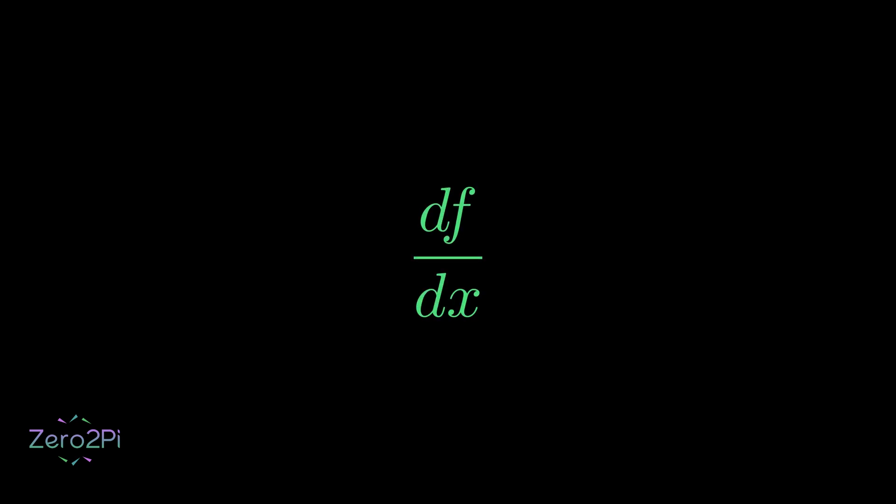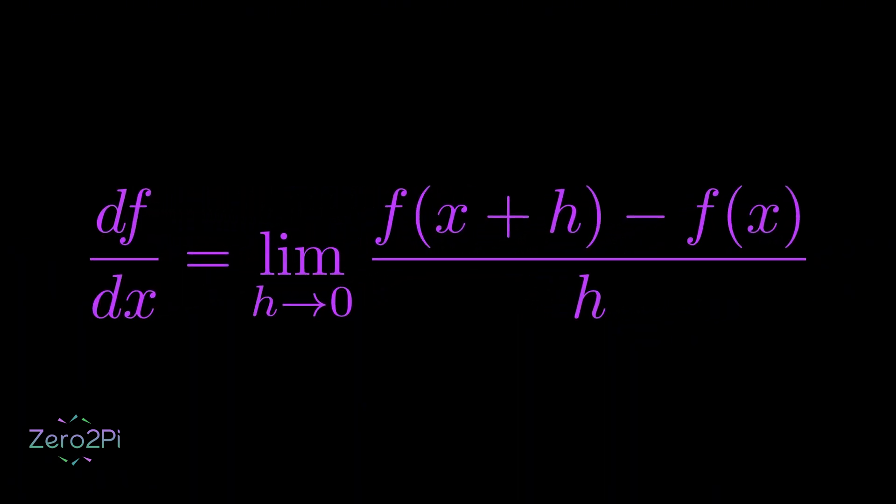Before we jump straight into partial derivatives, let's first revisit what df/dx actually means. At its heart, it's just this limit which you've probably seen many times. It's a way of asking how much does the output of a function f change when we make a tiny nudge to its input x. We call that tiny nudge h, and we want to see what happens as h gets really small, approaching zero.